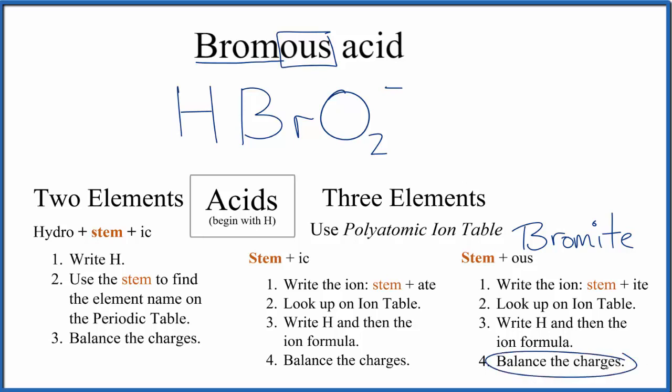Now we need to balance the charges. Hydrogen, group 1 on the periodic table, will be 1 plus. We said this whole bromite ion here is 1 minus, so the charges balance out. That means this is the formula for bromous acid, HBrO2.